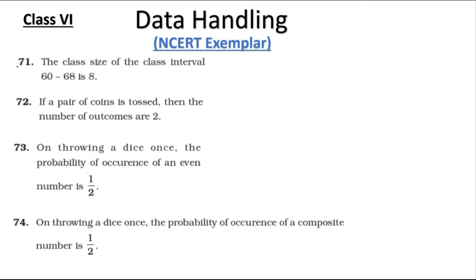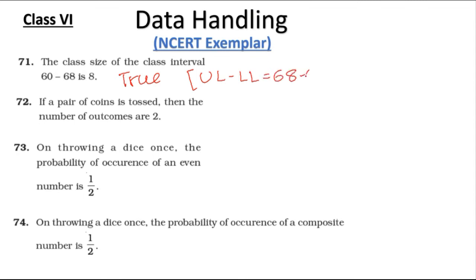Statement 71: The class size of the class interval 60 to 68 is 8 — this is true, because upper limit minus the lower limit gives the class size: 68 minus 60 is 8.